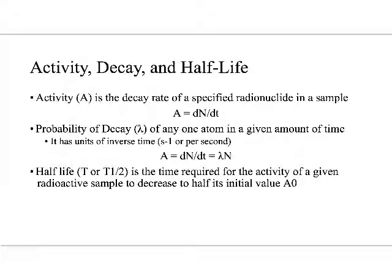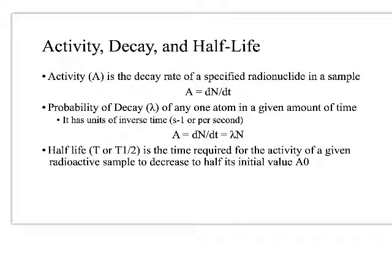Here's the part that scares most of us when we are in our first trimester in the program — activity, decay, and half-life. Activity is the rate of decay, so it happens over an amount of time. We can specify the radionuclide and say what its activity is; it's also listed on that periodic table of the nuclides.